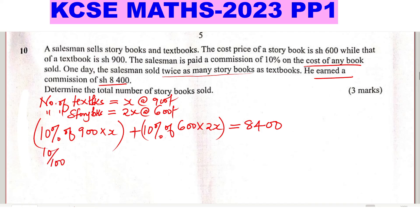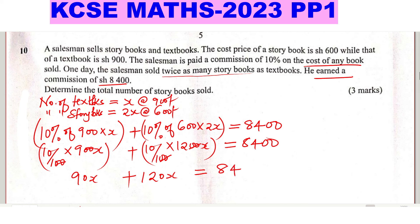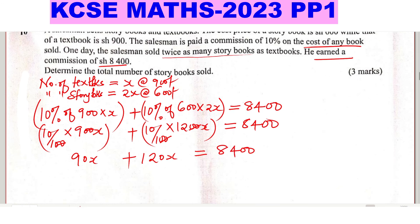For the storybooks, the same 10% of one storybook at 600 shillings gives the commission on one storybook. The number of storybooks sold is 2x, so that gives the commission for all storybooks. Adding these together gives 8,400. Working this out: 10/100 × 900x plus 10/100 × 600 × 2x, which gives 90x plus 120x, and 90x + 120x = 210x equals 8,400.